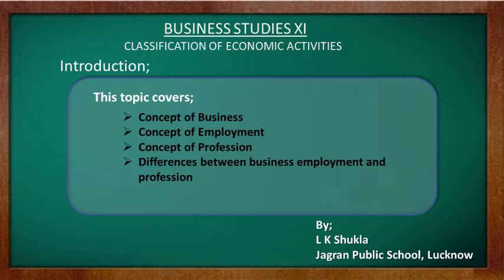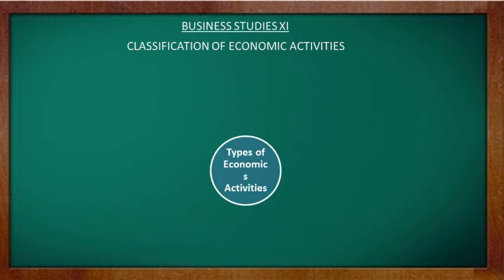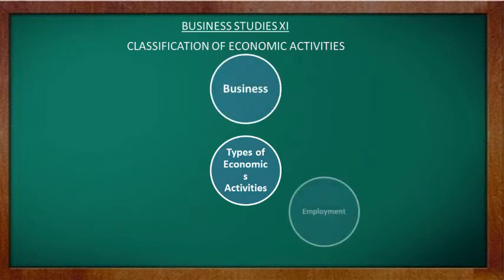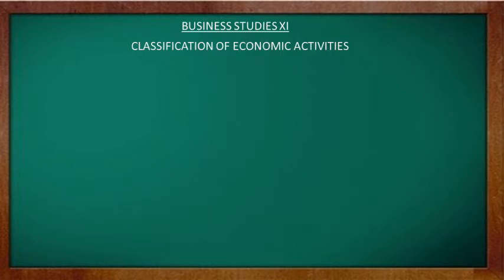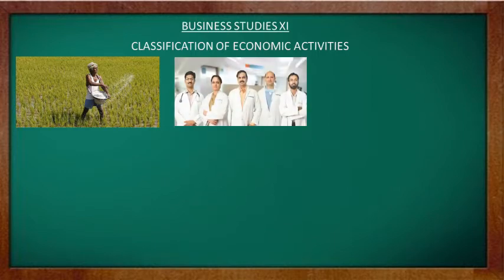In our previous video we discussed classification of human activities as economic and non-economic activities. Now we'll proceed with types of economic activities. Economic activities are classified into three categories — business, employment, and profession. Let's take some examples: a farmer doing farming to earn money, a doctor treating or consulting patients for money.